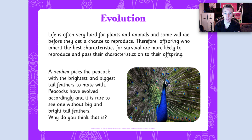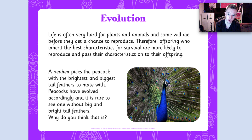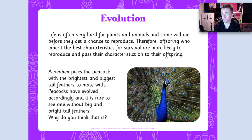Life is pretty tough for plants and animals and some will die before they have the chance to give birth to their offspring. Therefore, offspring who inherit the best characteristics for survival are more likely to have children themselves, and so they pass those characteristics on. A peahen picks the peacock with the brightest and biggest tail feathers to have children. Peacocks have evolved accordingly, and it's rare to see one without big and bright tail feathers because only those were able to have children.